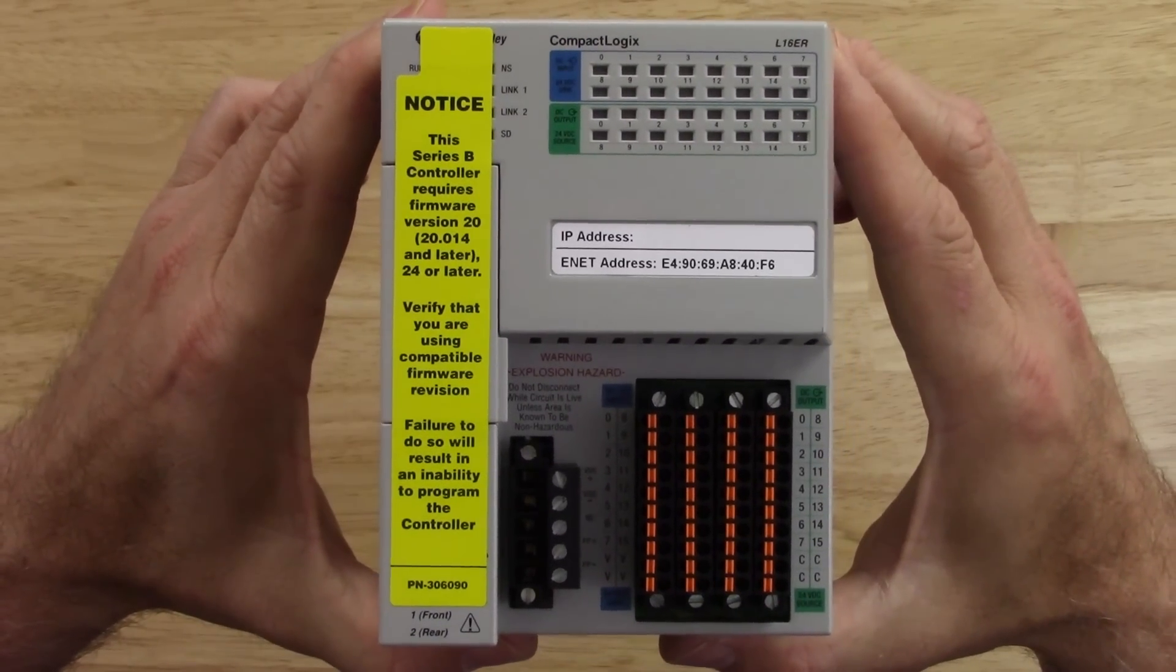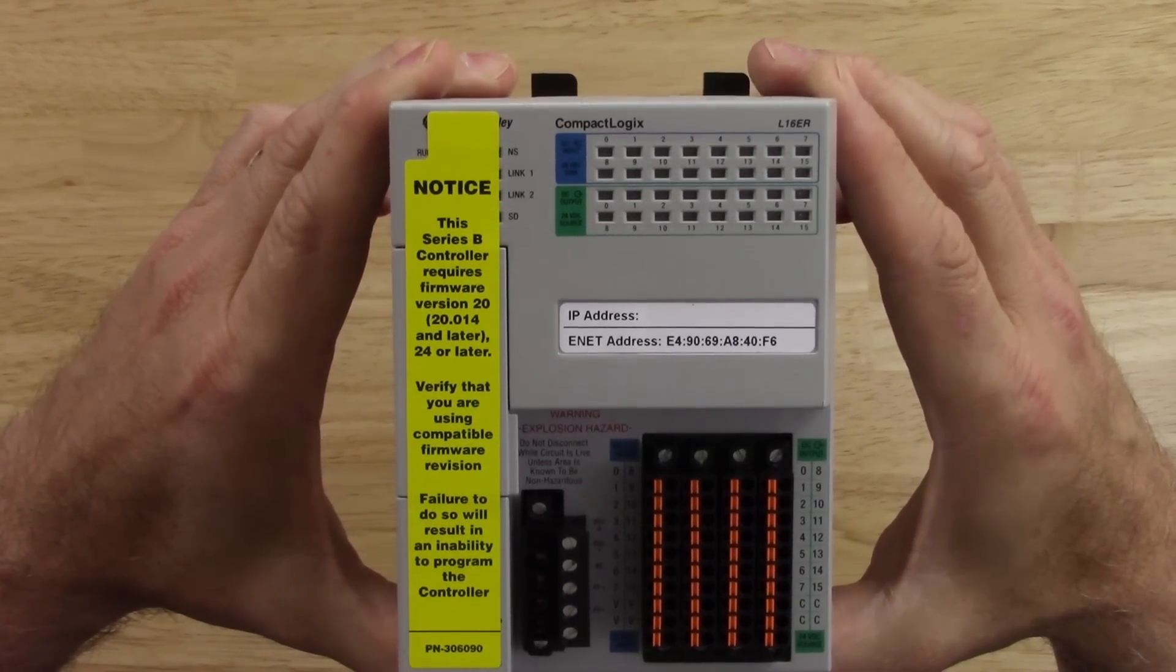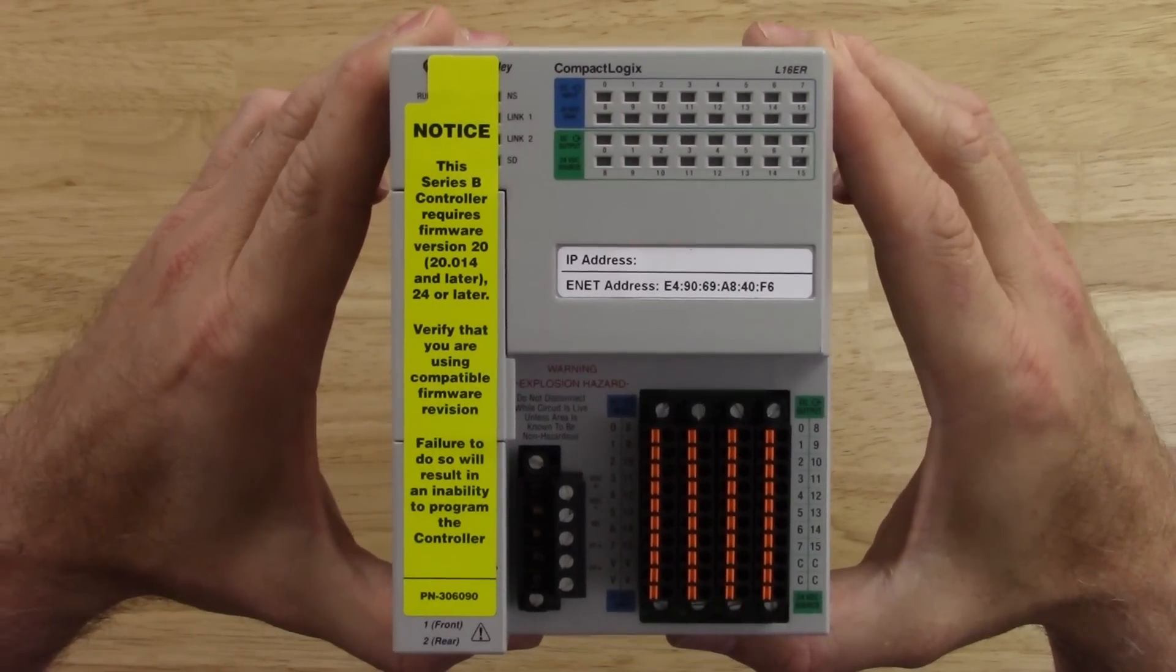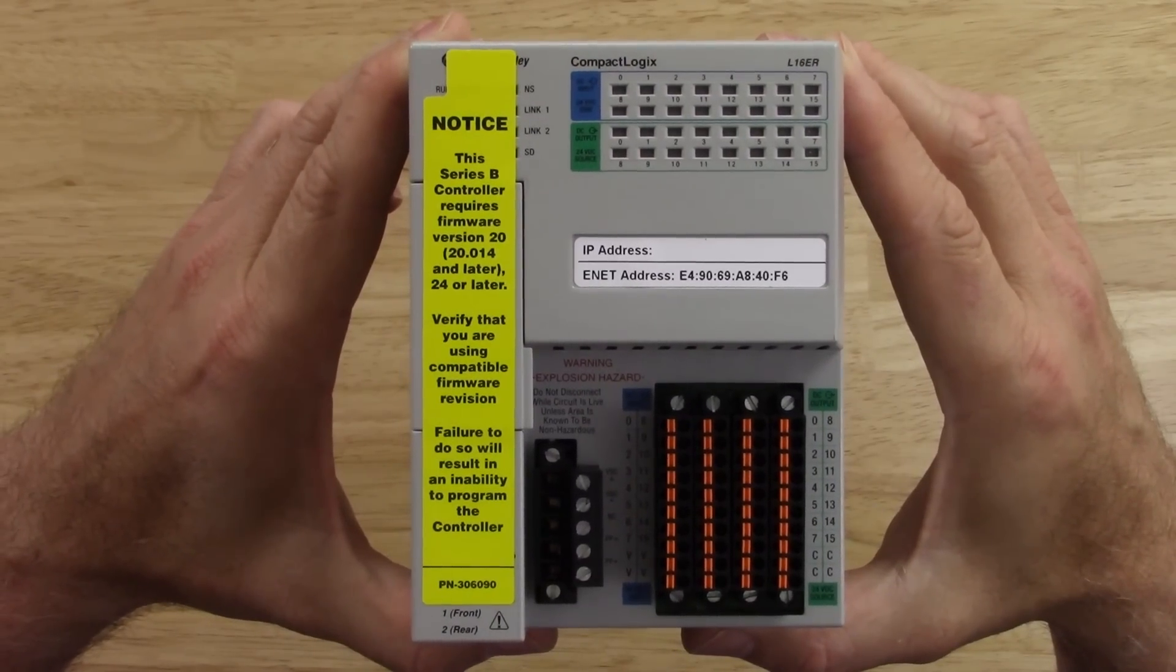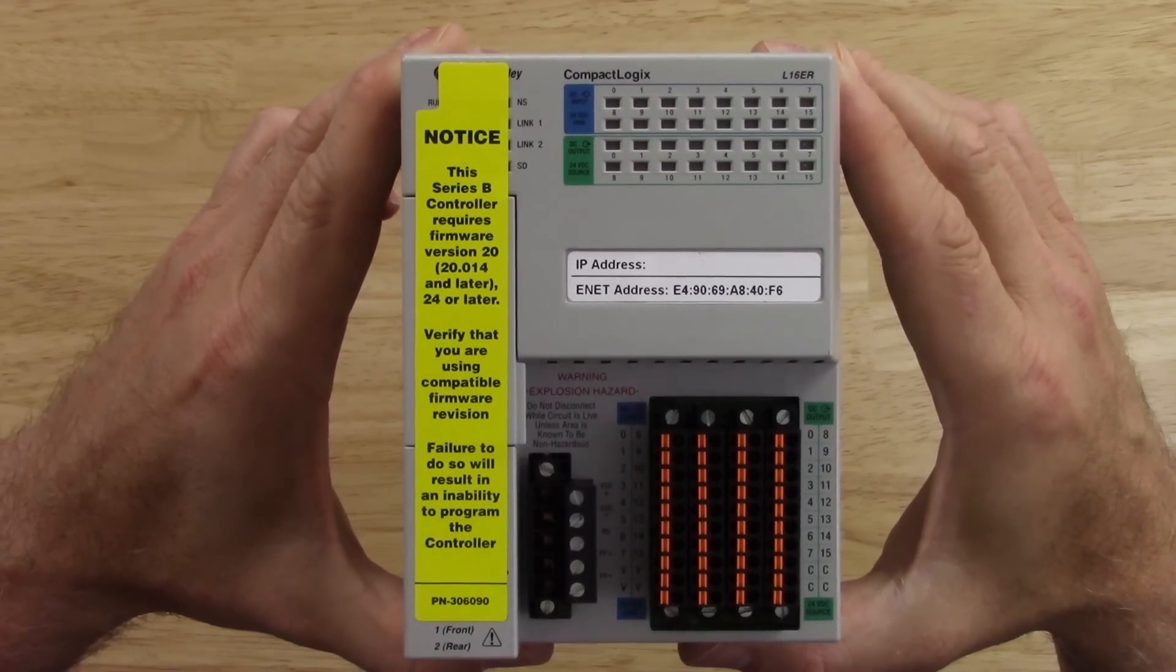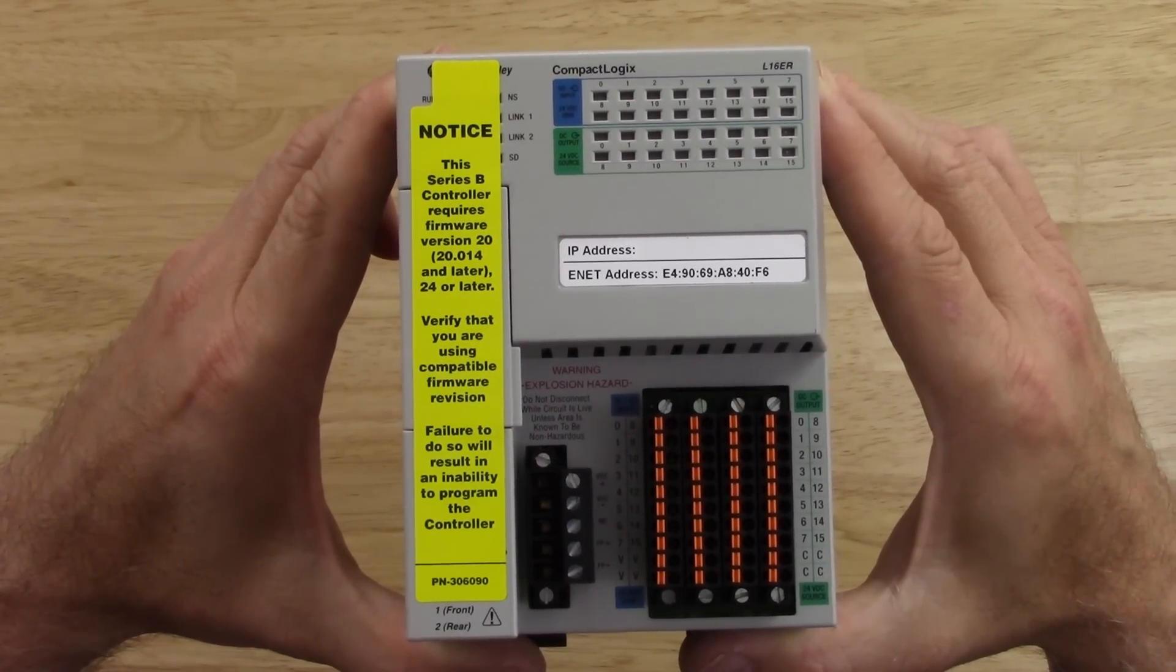The first thing I notice is we have this label over it. The label says that this is a Series B and it will only work with 20.014 firmware and later and 24 and later. Looks like they skipped 21 and 23.